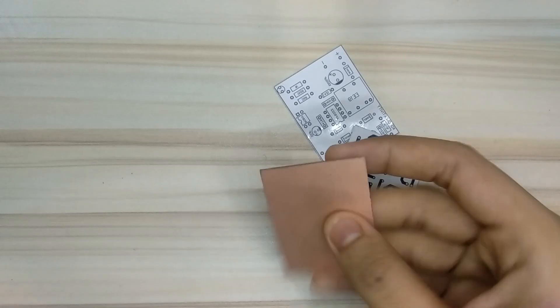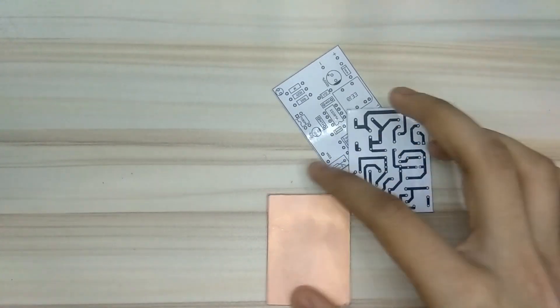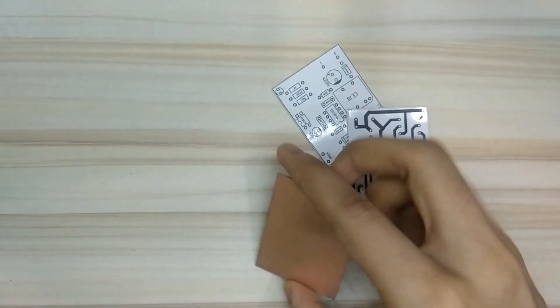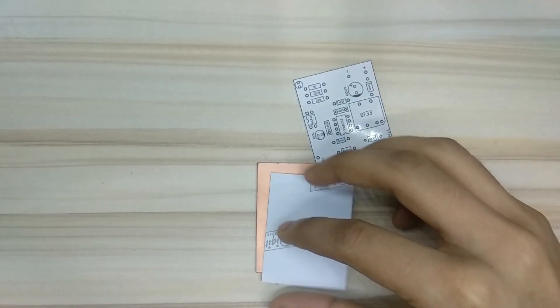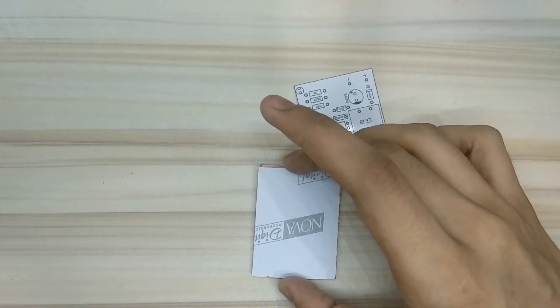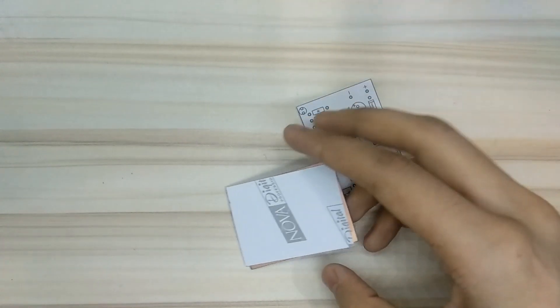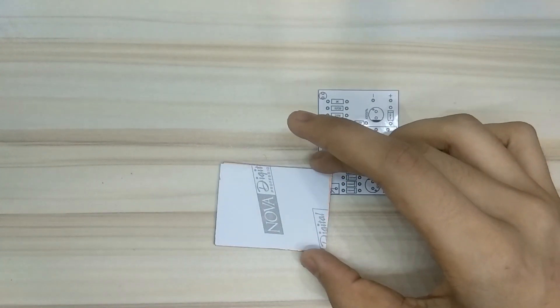So guys, first let's make the PCB. This is the copper clad board and this is the bottom layer. So clean this and use iron and press for 5 minutes. I've also made a video on how to make PCB, link is in the video description.